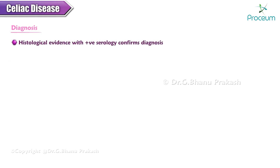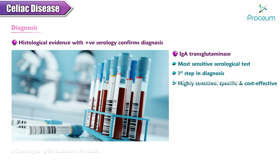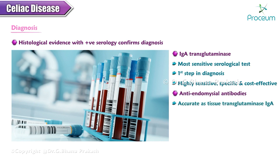Histological evidence with positive serology confirms the diagnosis of celiac disease. Immunoglobulin A tissue transglutaminase (IgA-TTG) is the most sensitive serological test and the first step for diagnosis — it is highly sensitive, specific, and more cost-effective than other antibody tests. Anti-endomyseal antibodies testing is as accurate as IgA tissue transglutaminase but more expensive and somewhat dependent on operator interpretation; as a result, it is typically used as a second-line test to clarify the diagnosis.